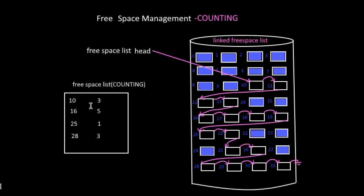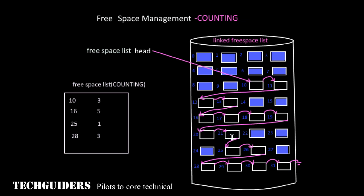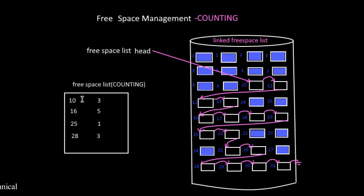Unlike the previous method, each entry has two values. But in most cases, files are allocated and de-allocated as contiguous blocks, so if contiguous free blocks are more frequent, the length of this entry list can be kept small.